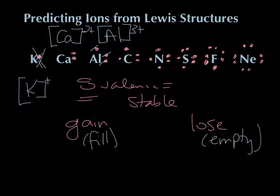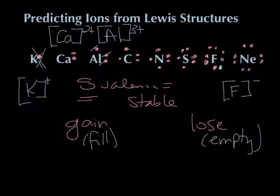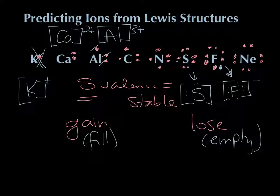Nitrogen, sulfur, and fluorine have a different situation — they're trying to get to eight but they're already over half full, so it makes sense to just gain a few electrons to fill up the empty spots. Fluorine gains one more electron and becomes fluoride — it truly has all eight electrons all the way around. Sulfur is missing two spots out of eight, so it gains two electrons to become sulfide — that's a 2⁻ charge because it gained two electrons.